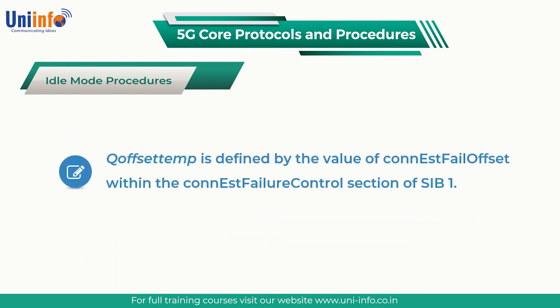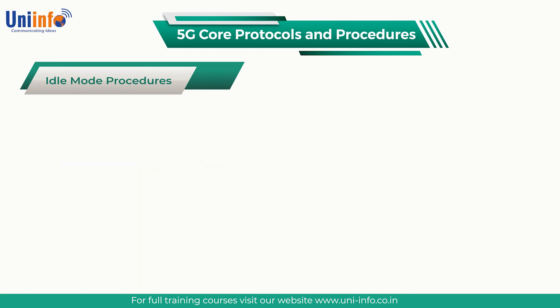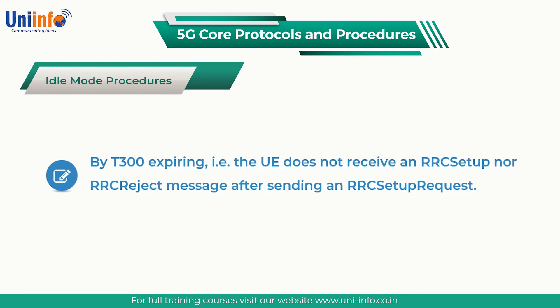Q Offset Temp is defined by the value of the connection establishment failure offset within the connection establishment failure control section of SIB1. This temporary offset is applied if the UE experiences repetitive connection setup failures caused by T300 expiring — i.e., the UE does not receive an RRC Setup nor RRC Reject message after sending an RRC Setup Request. The temporary offset is applied for a period T if T300 expires for N consecutive connection setup attempts, where T equals the connection establishment failure offset validity and N equals the connection establishment failure count. The temporary offset makes the S criteria more stringent so the UE is more likely to start searching for another cell.